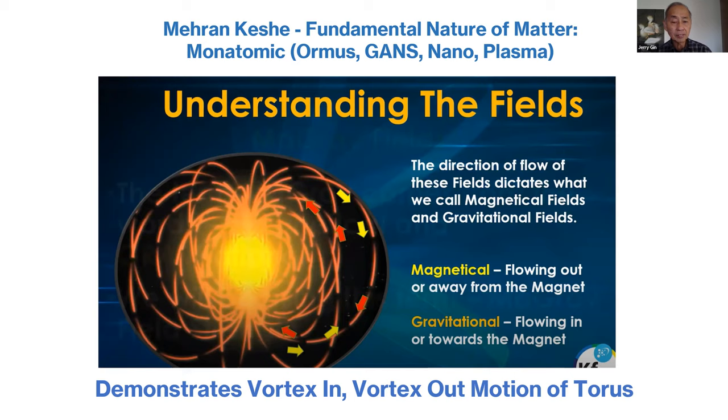Keshe talks about gravitative, which is the flowing-in motion—the creation of matter—and the flowing-out, which is the magnetic nature. He talks about magrav fields. These form fields and are the nature of GANS and nano structures of matter. When people talk about monatomic matter or ormus, this is a good explanation. It has the vortex-in, vortex-out motion of the torus.